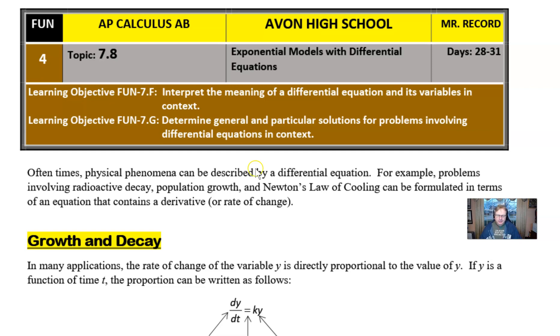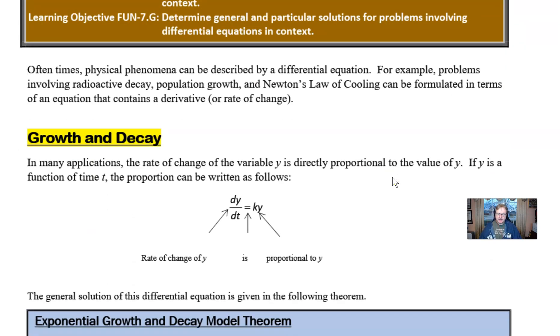A lot of this might look familiar, perhaps a connection to your pre-college algebra or chemistry class, but we're going to really dive into the calculus behind it. So what is growth and decay? Well, oftentimes we will say that the rate of change of a variable y is directly proportional to the value of y. In other words, the rate at which something grows is directly linked to how much of that material is already there.